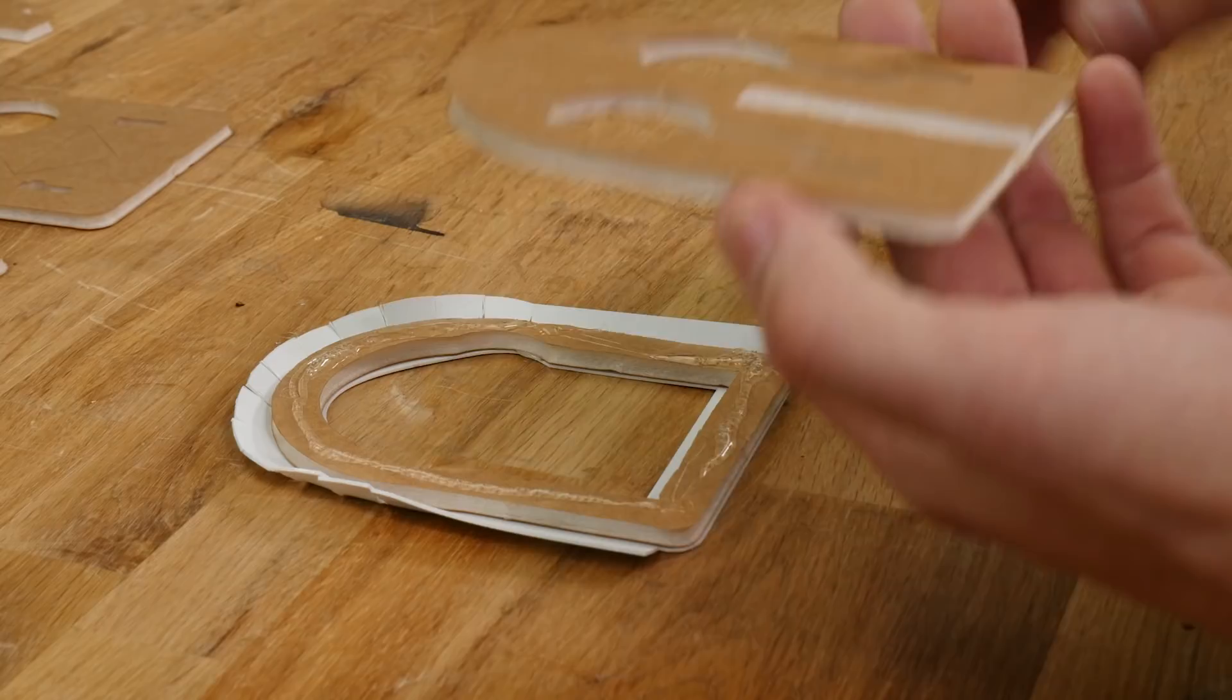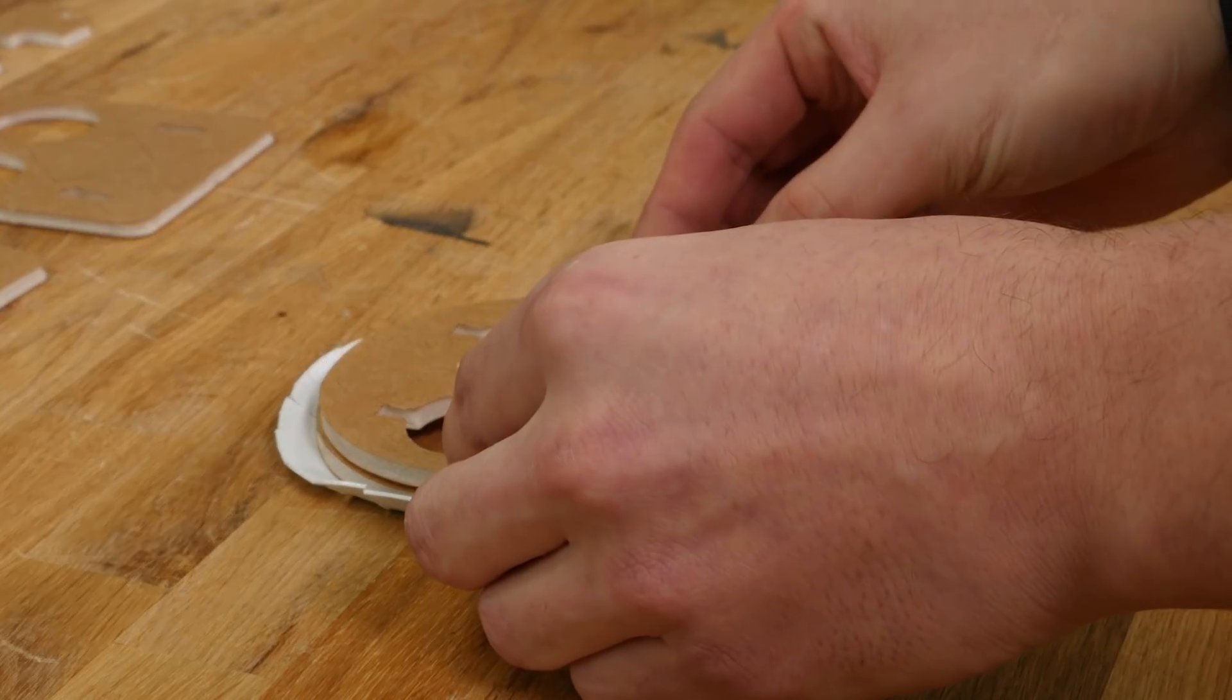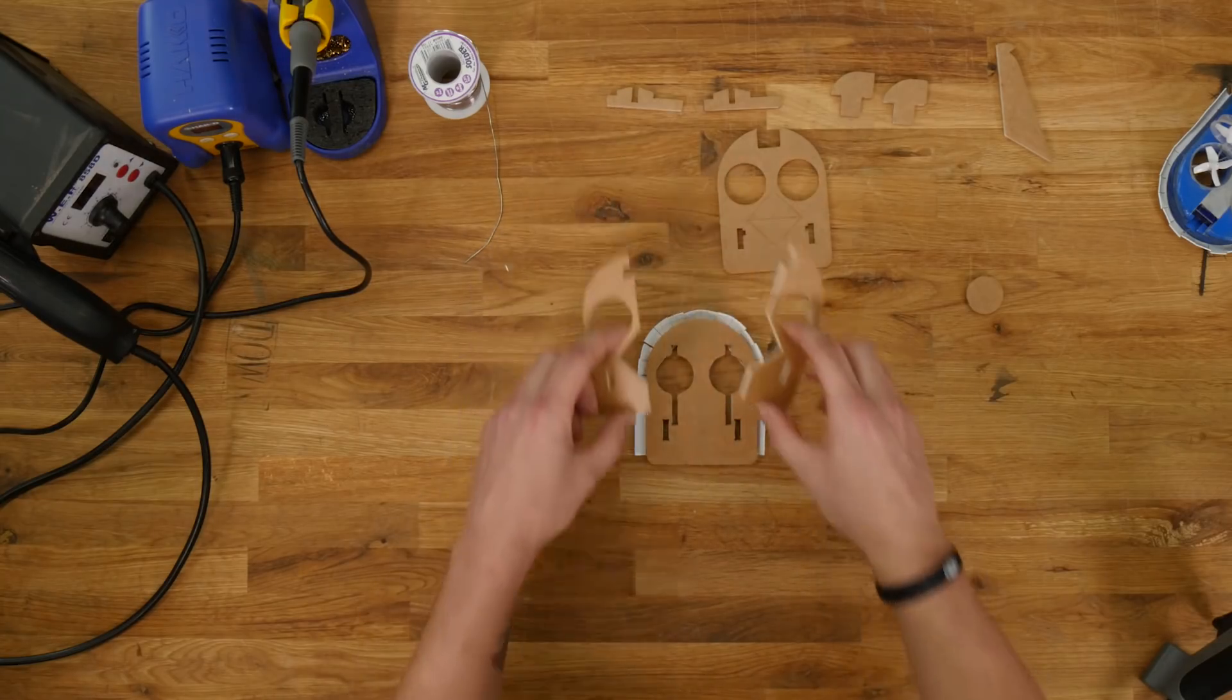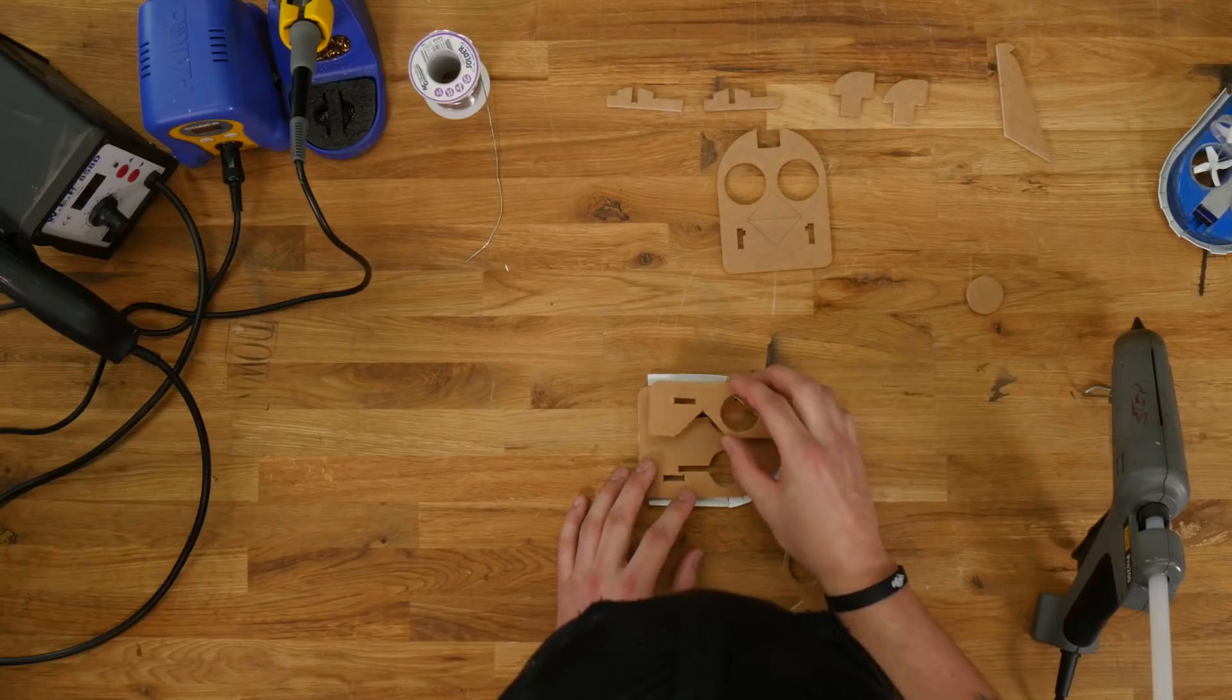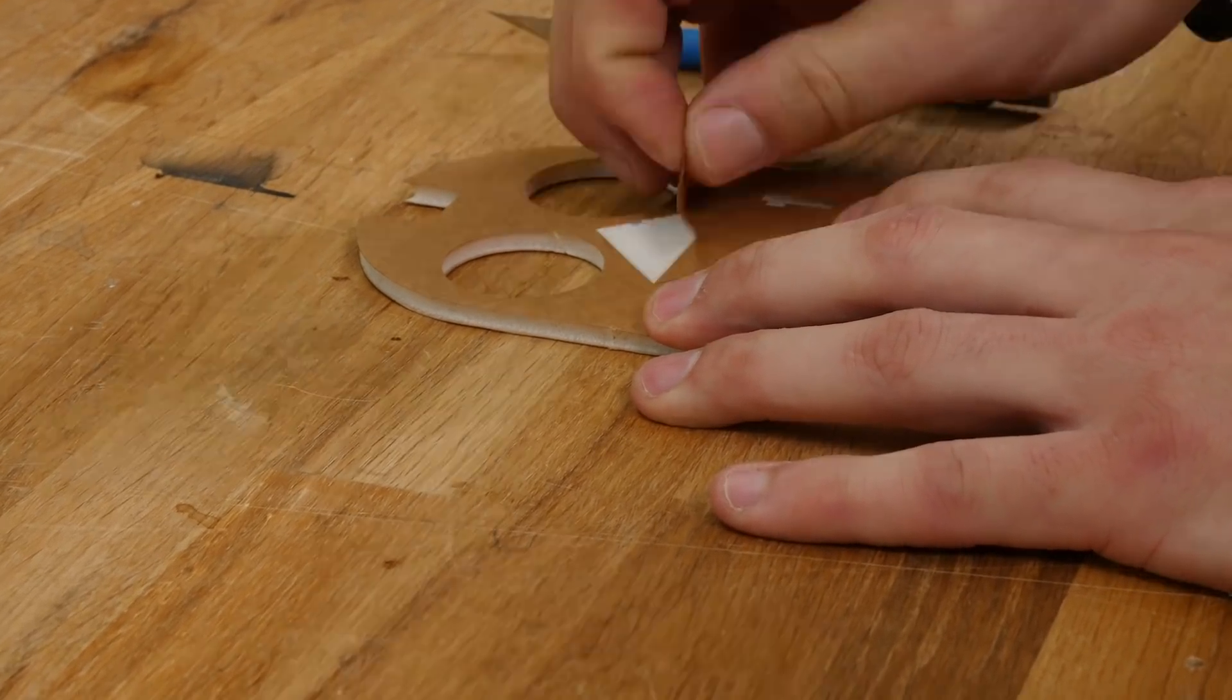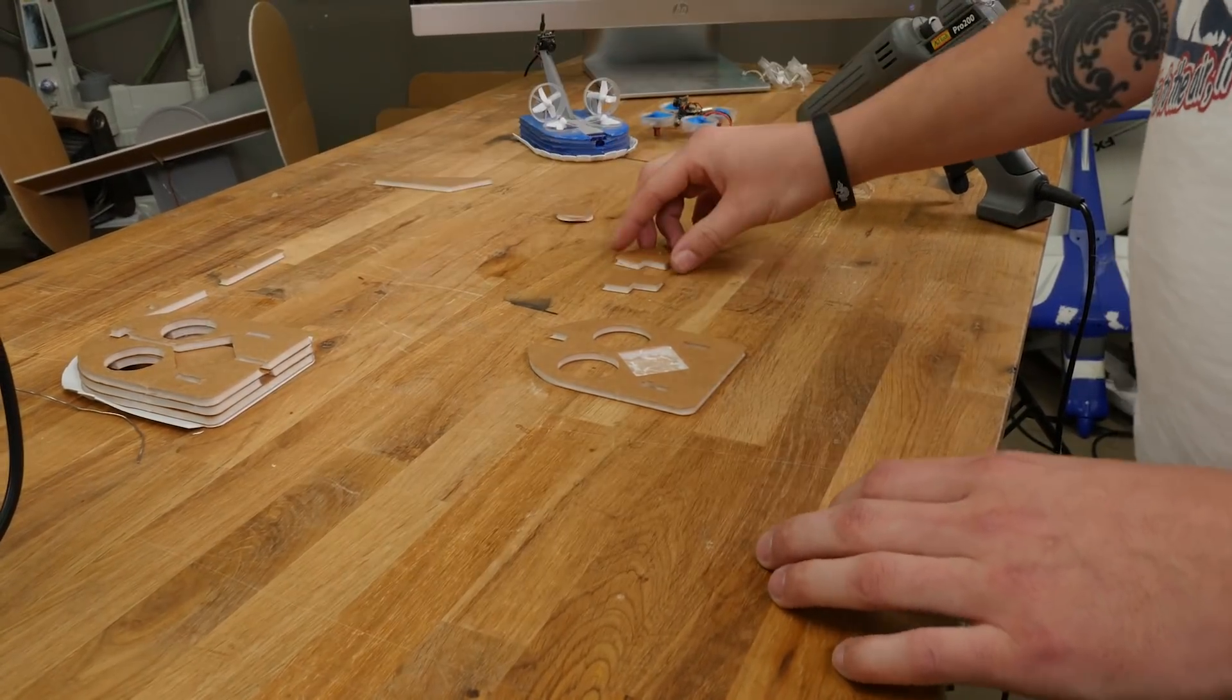Take your second layer with the battery hollowed out part facing down and glue it to your bottom layer. Take these two pieces and glue them on top. Take the next layer and scrape out the center piece. Take these two pieces and attach them to the top.